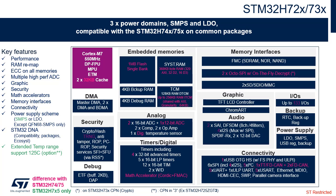The CORDIC co-processor accelerates certain mathematical functions, mainly trigonometric ones, and the FMAC accelerator performs arithmetic operations on vectors. The product is available with three different flash sizes: 1 megabyte, 512 kilobytes, and 128 kilobytes configuration.